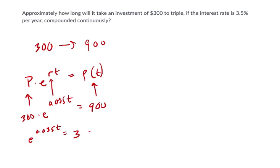Then we want to take the natural log of both sides. So the natural log of e to the 0.035t equals the natural log of 3. This right here is just the exponent, 0.035t, and this is the natural log of 3.